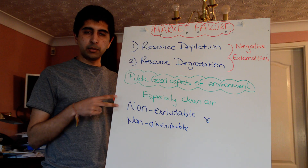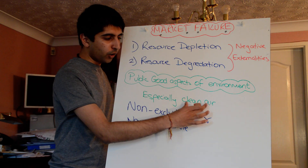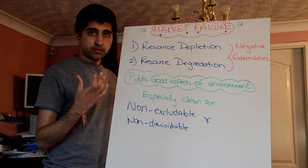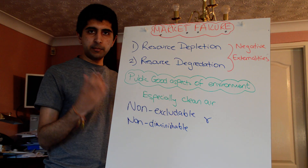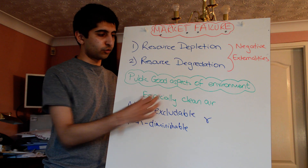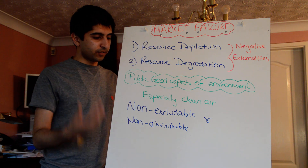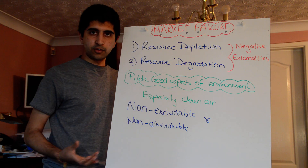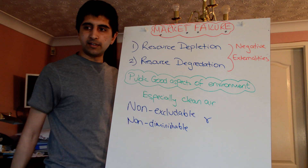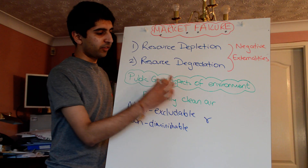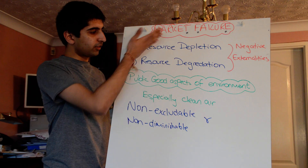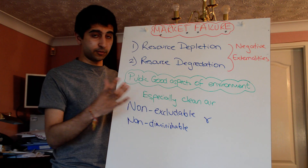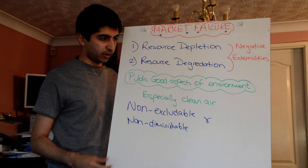Both of these characteristics imply that no one is going to bear the cost of cleaning up air, because the benefit of doing so can't be confined to the person actually trying to clean it up. As a result, no one cleans up the air, there's no market for clean air at all, and that's a case for government intervention. So those are the three things that are very important for recognising environmental market failure and the difference between A2 and AS market failure.